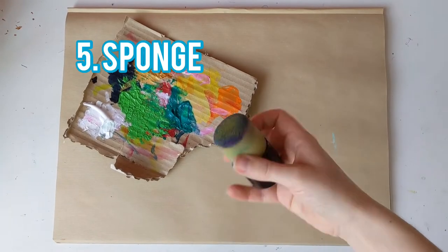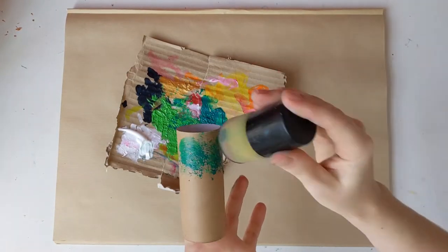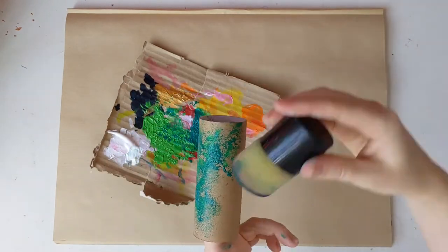Next I'm using a sponge to decorate the toilet rolls. So again green paint and I'm just going to sponge all over. And this gives a texture that looks a little bit like scales I think. Quite snake-like.